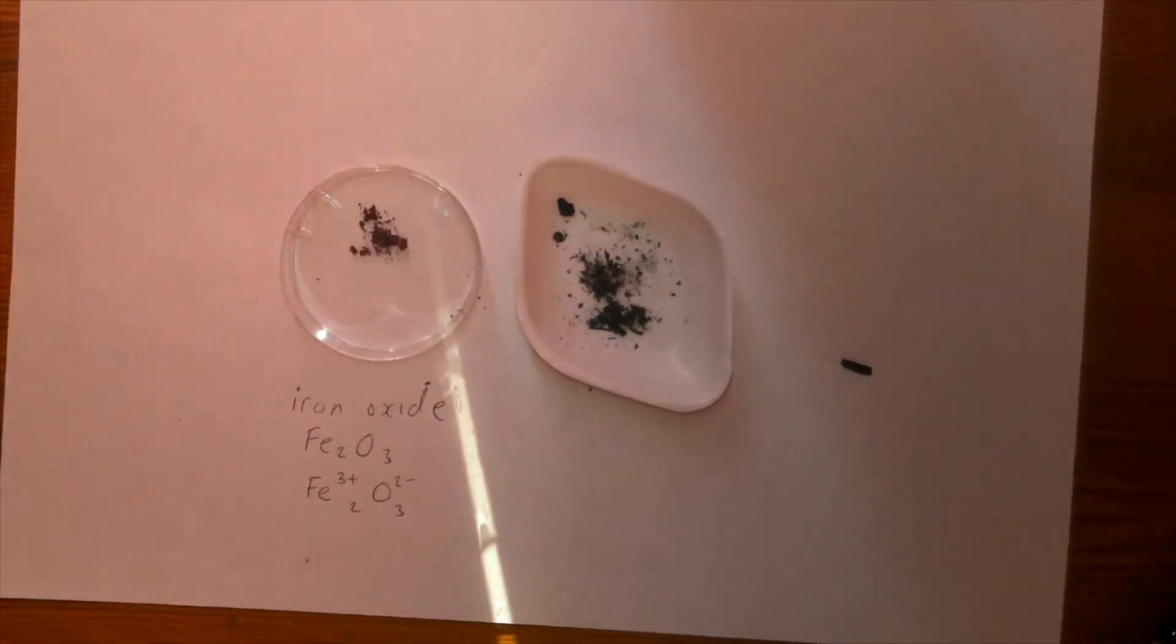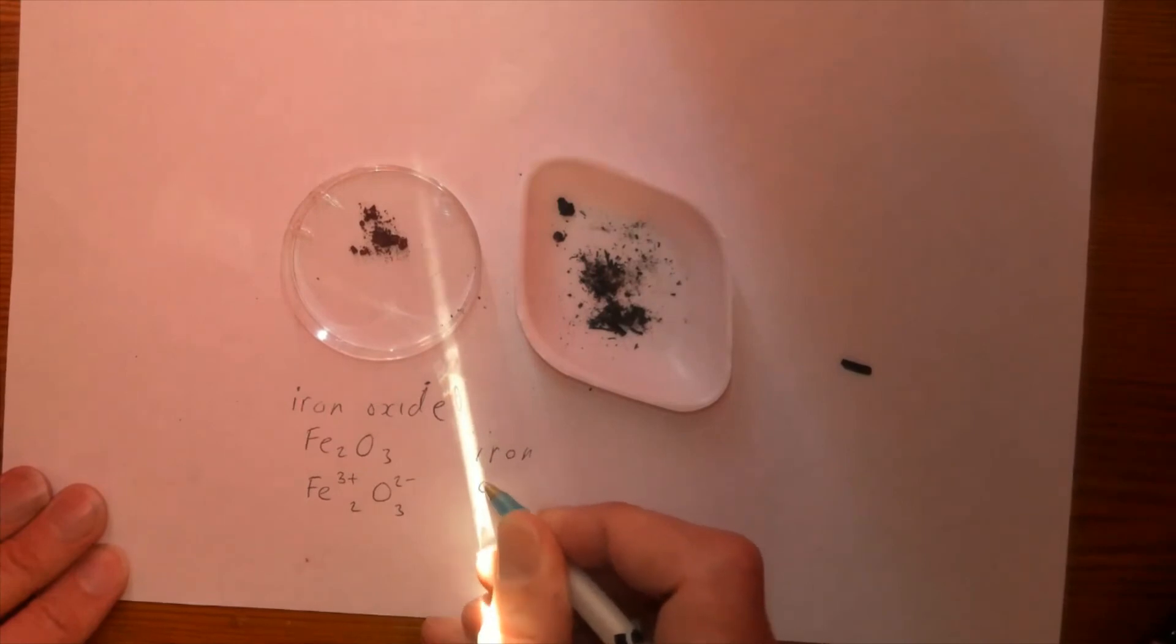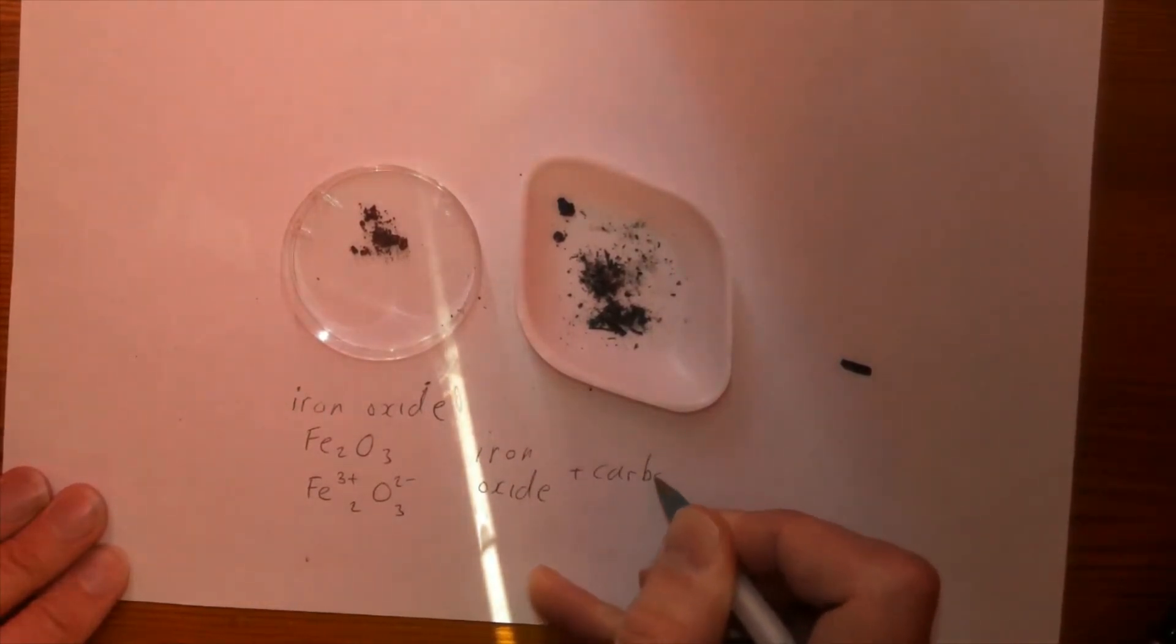To summarize, what's happened is I've taken the iron oxide, reacted it with carbon, and we've created pure iron, which we saw as magnetic iron inside there, and I would have produced carbon dioxide as the carbon took the oxygen off of the iron.